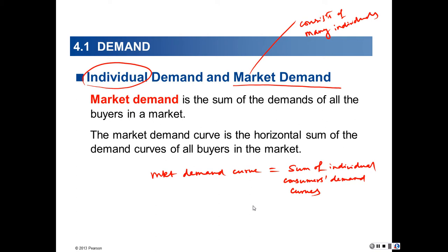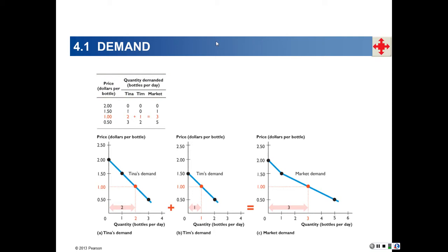All we need to do is add up the demand curves of the individual consumers who make up the consumer side of the market. A market consists of at least two sides: firms and consumers. We simply add up all the individual demand curves of these individual consumers.